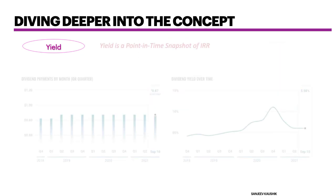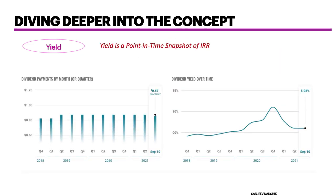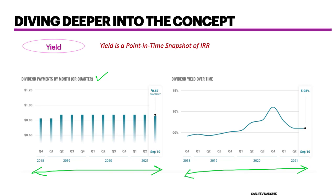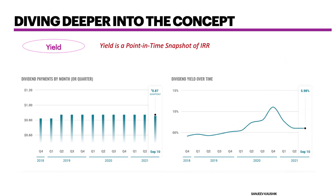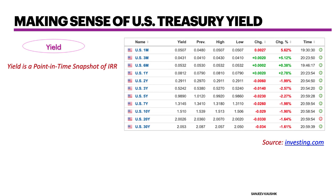Yield is nothing but a point-in-time snapshot of internal rate of return. Looking at this chart, this is the dividend that Exxon Mobil has been paying and this is how the yield has been fluctuating over time — currently at about 3.5%. Essentially your yield is determined by the price at which you bought that stock. Can we take this concept of yield and relate it to the US Treasury yield?